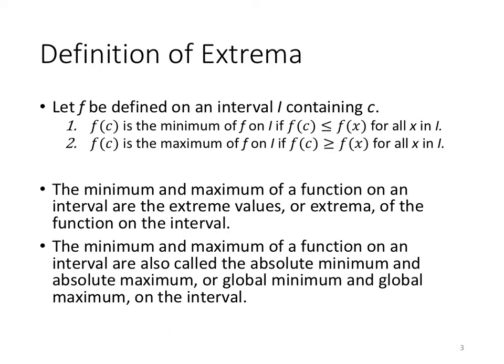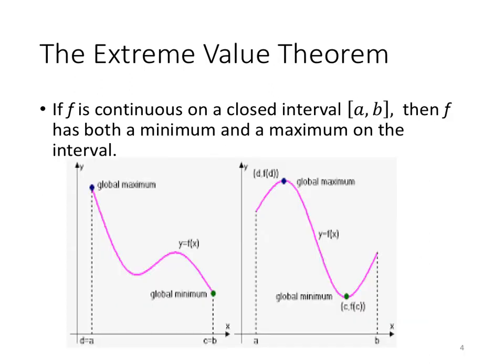The minimum and maximum of a function on an interval are also called the absolute minimum and absolute maximum, or global minimum and global maximum on the interval. So minimums and maximums we call them extreme values; we could also call them relative or absolute maximums and minimums.